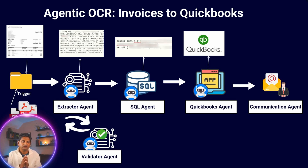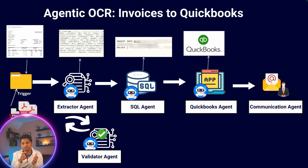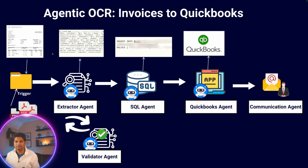Now let me walk you through a real-world implementation we built for a customer. He needed to process invoices placed by a user in a folder, directly into QuickBooks. The workflow was straightforward: invoices were placed as PDFs or images in a folder, and our extractor agent monitored this folder and processed documents as they arrived. In this case, since the customer only had invoices, we skipped the manager agent and went directly to an extractor agent.